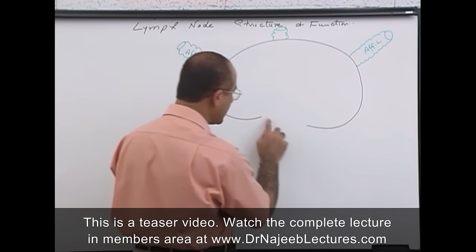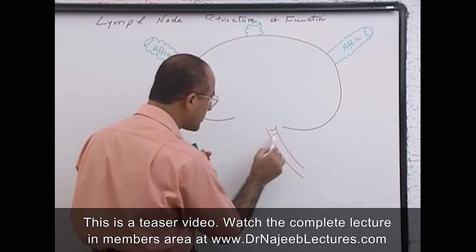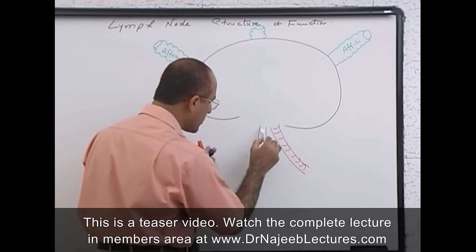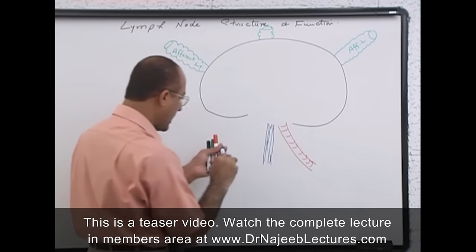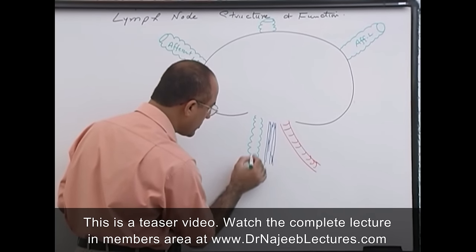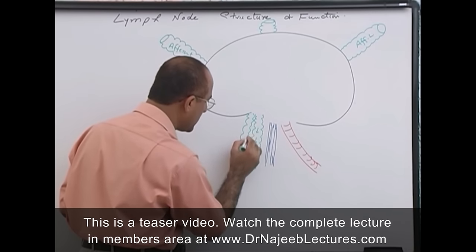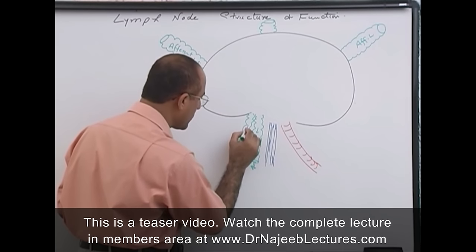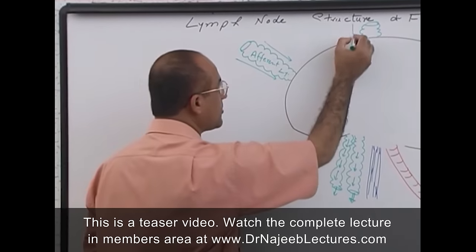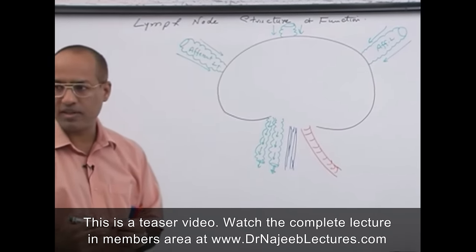The concave surface of the lymph node is called the hilum. Here, arteries are approaching to the lymph node and veins are draining from the lymph node. There are one or two efferent lymphatics at the hilum. So lymph incoming through afferent lymphatics on the convex surface, and lymph outgoing through the efferent lymphatics from the hilum.